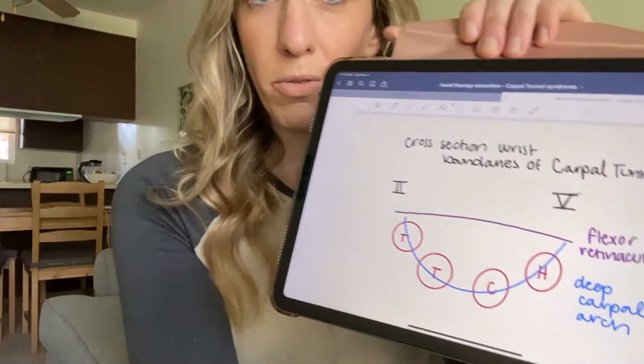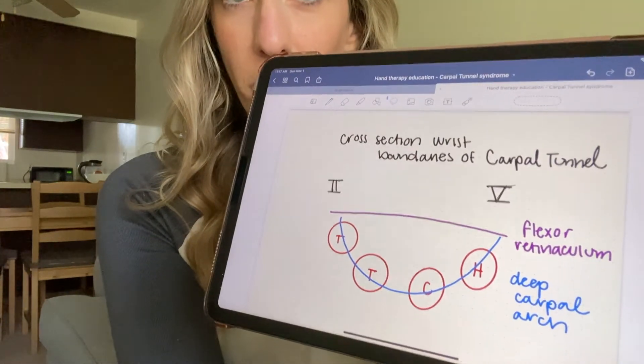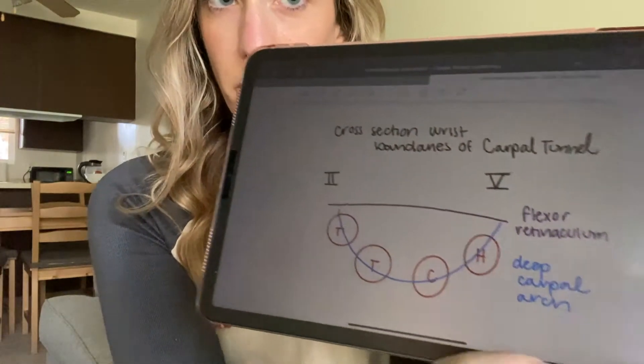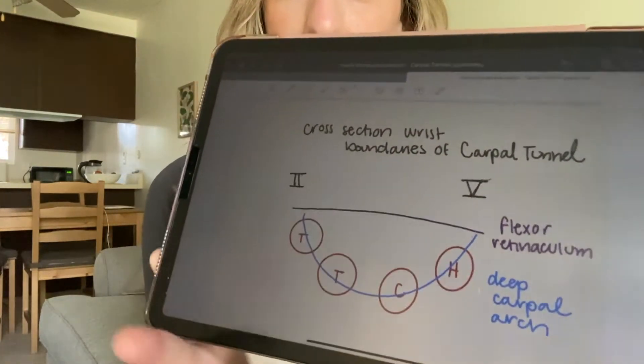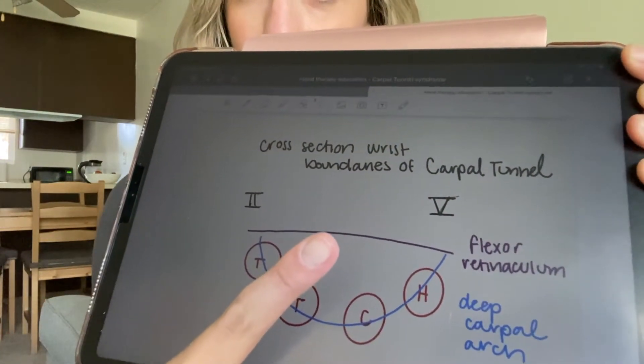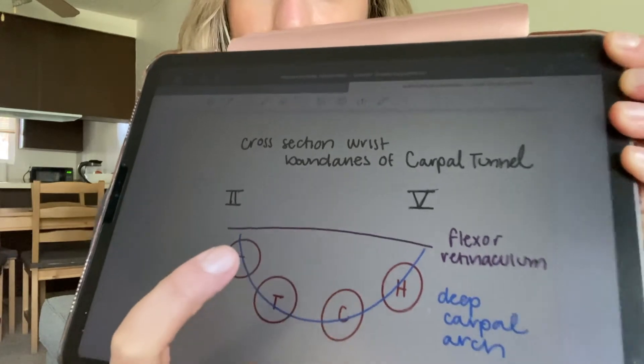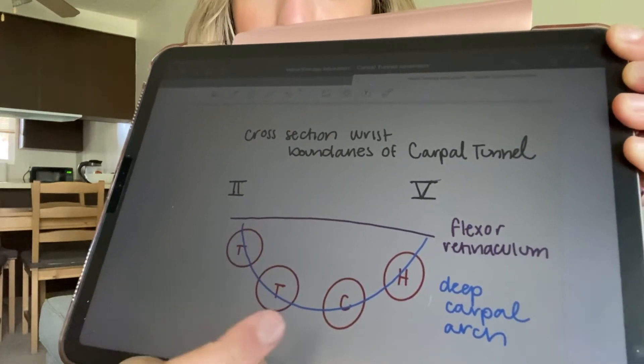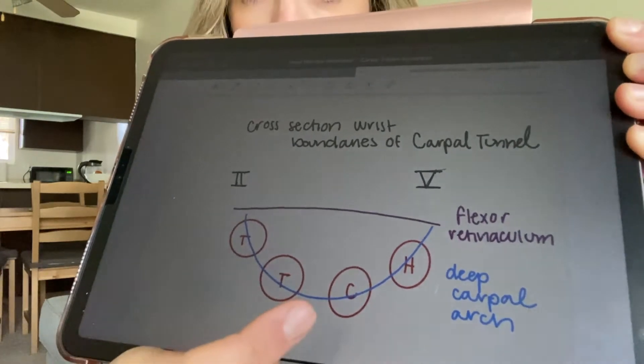A good place to start is talking through the boundaries of the carpal tunnel — what anatomically makes up the carpal tunnel. I drew some things on my iPad to show you. We're looking at a cross-section of the wrist. On one side you've got the second digit or the index finger; on the other side you have the pinky or the fifth finger. In purple, I've got my flexor retinaculum, and then the blue arch is representing the deep carpal arch.